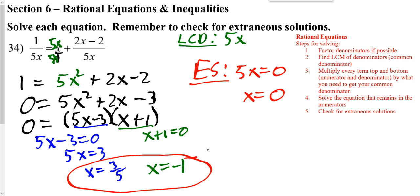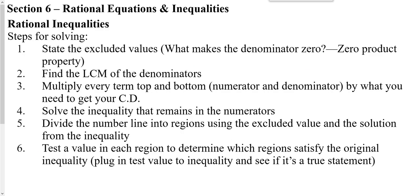Now we're going to go ahead and solve rational inequalities. To solve rational inequalities, you still need to look for that excluded value or extraneous solution. You still need to find your common denominator and get all fractions to have that common denominator. Then you want to just work with your inequalities on the top. Your excluded value and what you get from solving it both go on a number line, which divides it into regions that work and regions that don't. You just have to try a number in each region to see what works.